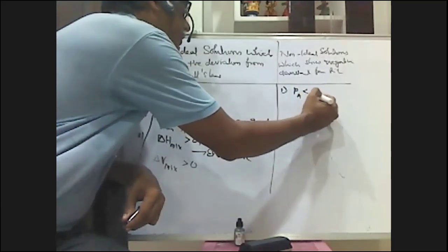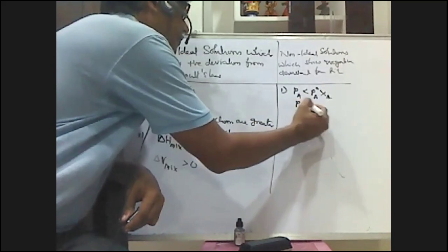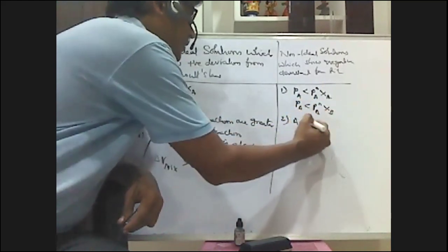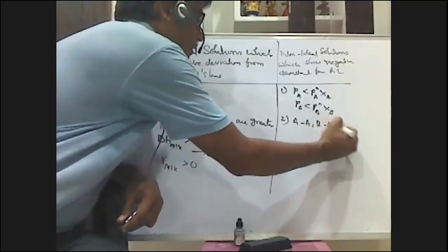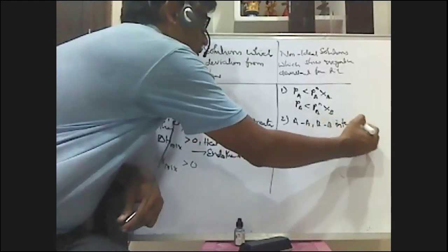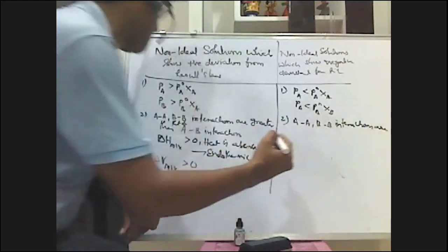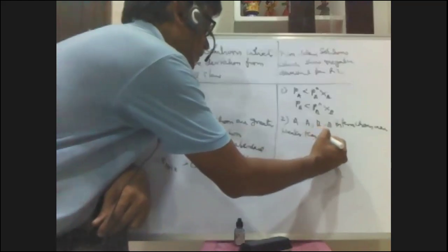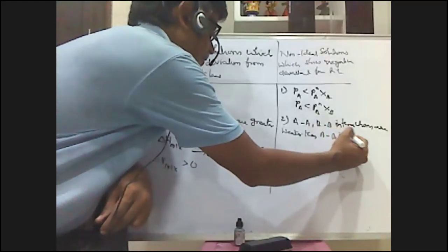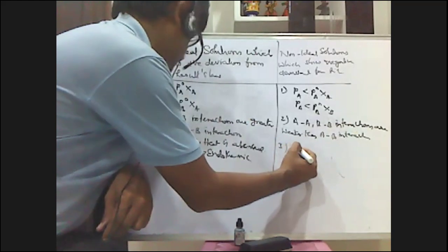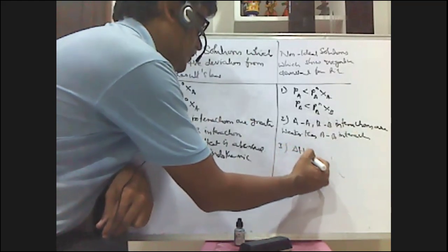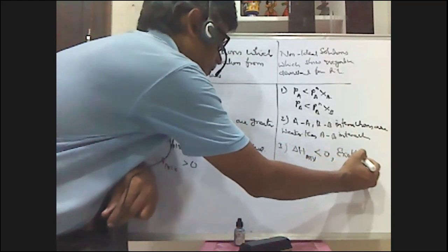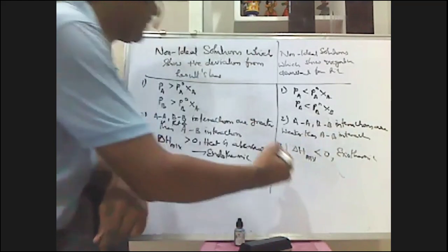For non-ideal solutions showing negative deviation: PA is less than PA⁰ × XA, and PB is less than PB⁰ × XB. The second characteristic is that AA and BB interactions are less than AB interactions. The third characteristic is that ΔH mixing is less than zero — that is, it is exothermic, meaning heat is evolved.